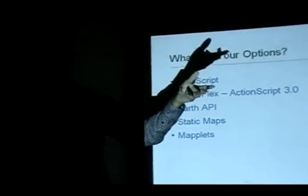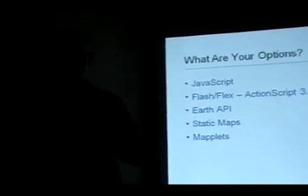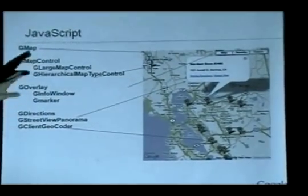These are the different options. Whether you're a programmer or not, you can start with JavaScript. If you're a Flash developer, there's Flash options. There's an Earth API if you come from Google Earth. There's Static Maps if you want just a static image, and I'll tell you what Maplets are in a second as well. The JavaScript option is the classic API — if you've used Google Maps, you can drag and drop the map, and it gives you some of the same functionality you see in terms of the info window and different kinds of maps.